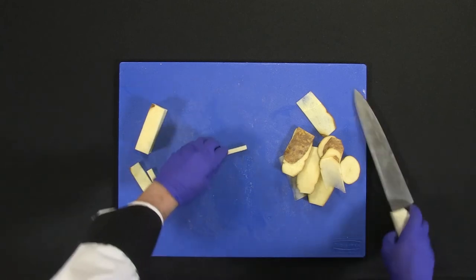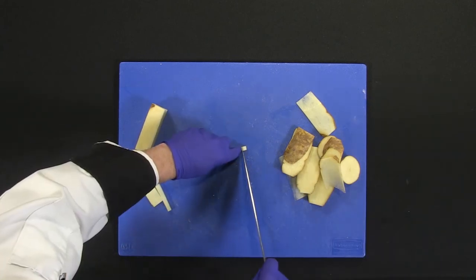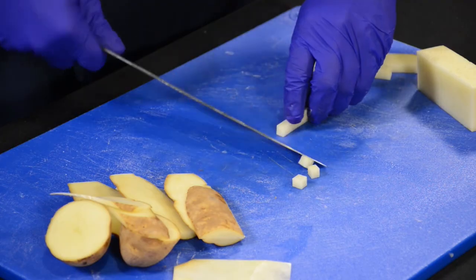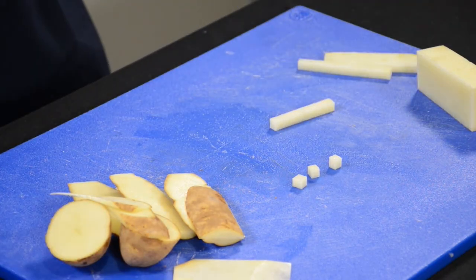After you obtain this cut, the beautiful thing about this one is you'll be able to get your small dice. You can do this with any kind of tuber and carrot.